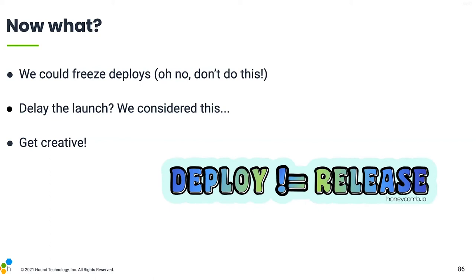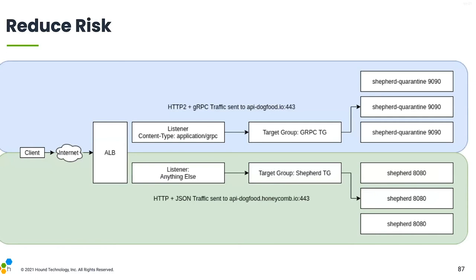Should we delay the launch? We considered that, but it really sucked because this was an important launch for a partner of ours and we knew our users wanted it. Third option: get creative. Fortunately, we had decoupled deploys from releases using feature flags. So we decided to apply infrastructure feature flagging — send all HTTP/2 gRPC traffic to a dedicated branch of workers. That way we can keep the 99.9% of users using JSON traffic perfectly stable, because we're teeing that traffic for them at the load balancer level. This is how we ensured that we could reliably serve as well as experiment.